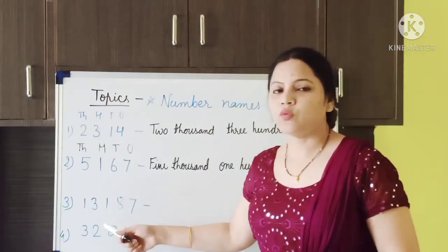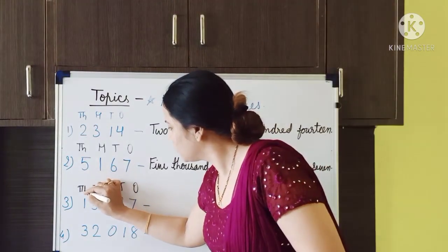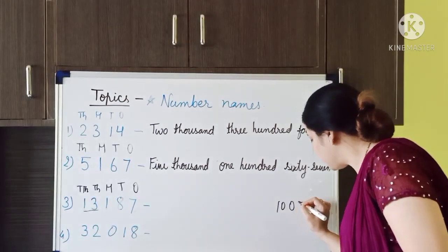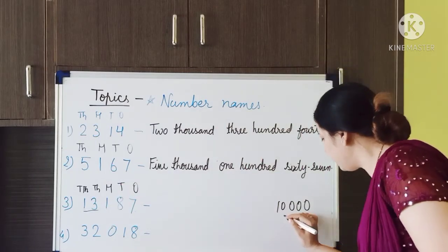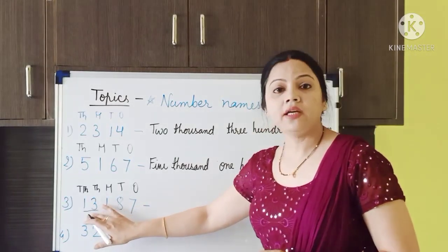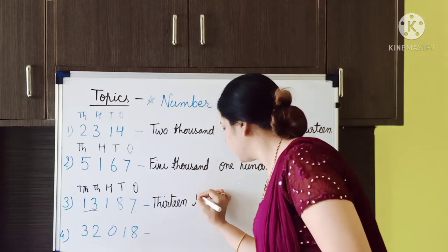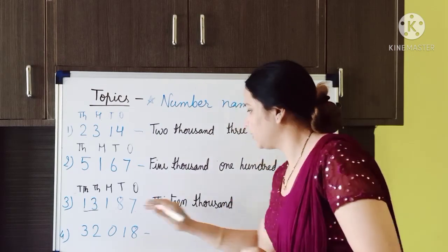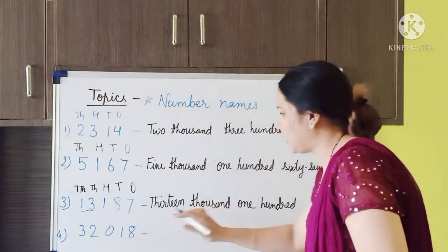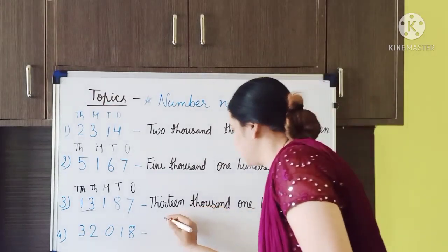Now for the 5 digit number: the place values are 1s, 10s, 100s, 1000s, and 10,000. Here 1 is placed at 10,000 and 3 is placed at 1000. So 10,000 plus 3,000 equals 13,000. The number is thirteen thousand, one hundred and eighty-seven.